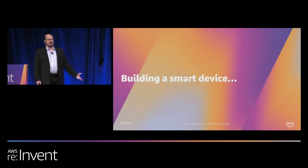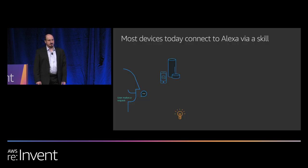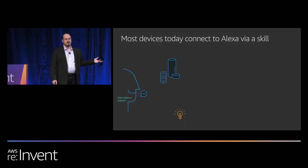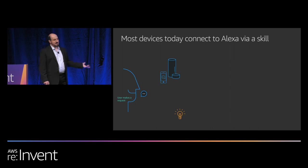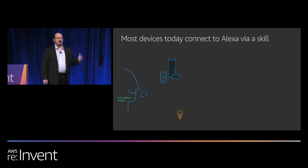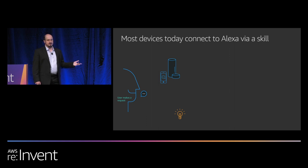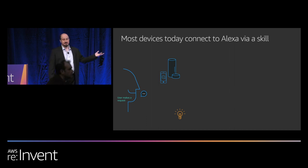So how do you build devices for Alexa today? Let's take a quick look under the hood of Alexa Skills Kit and see how a smart device is being controlled through Alexa. First, the user makes a request, primarily using voice through their Alexa built-in device — for example, saying, Alexa, turn on the light.